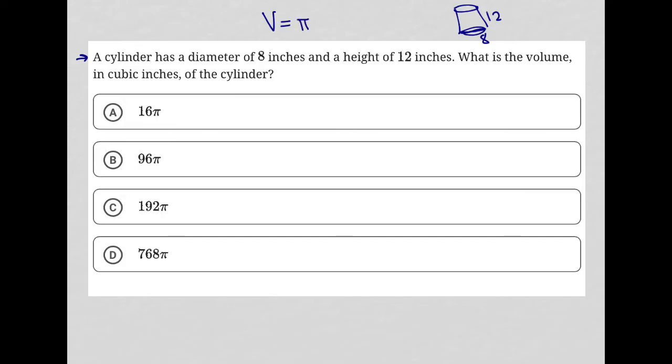The formula is pi r squared h. Again, the formula is provided, so just find it when you're doing your practice for the digital SAT. So what do we know?